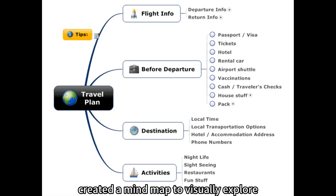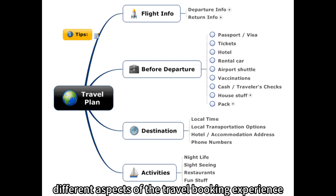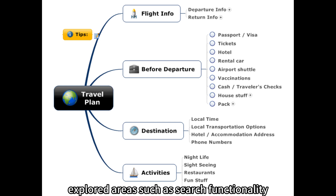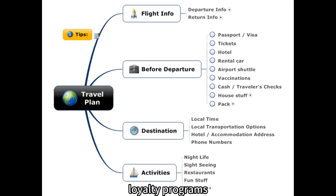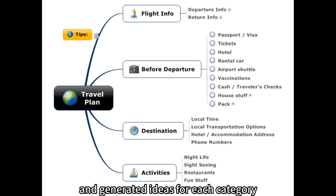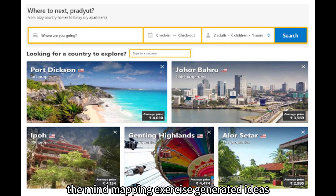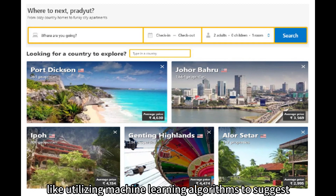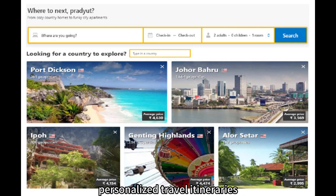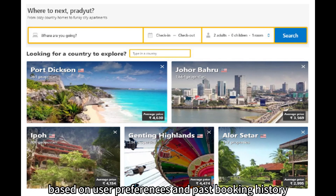Mind Mapping: created a mind map to visually explore different aspects of the travel booking experience. Explored areas such as search functionality, user profiles, loyalty programs, and personalized recommendations, and generated ideas for each category. For example, under personalized recommendations, the mind mapping exercise generated ideas like utilizing machine learning algorithms to suggest personalized travel itineraries based on user preferences and past booking history.